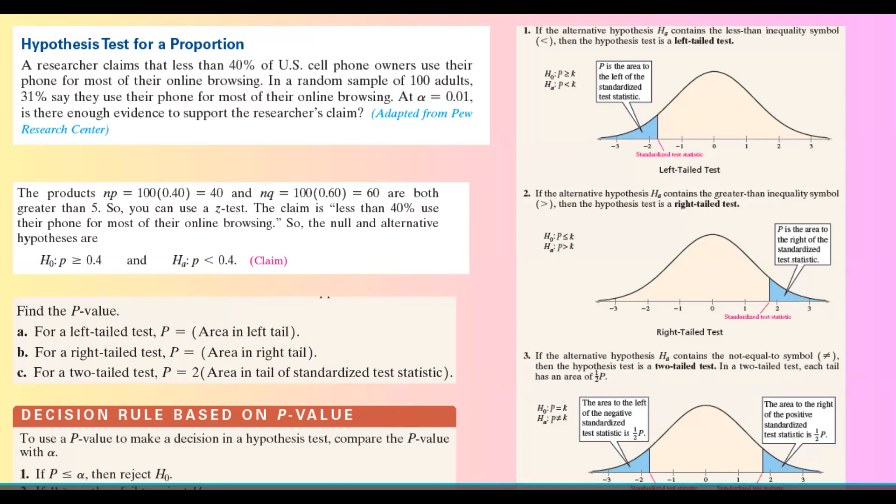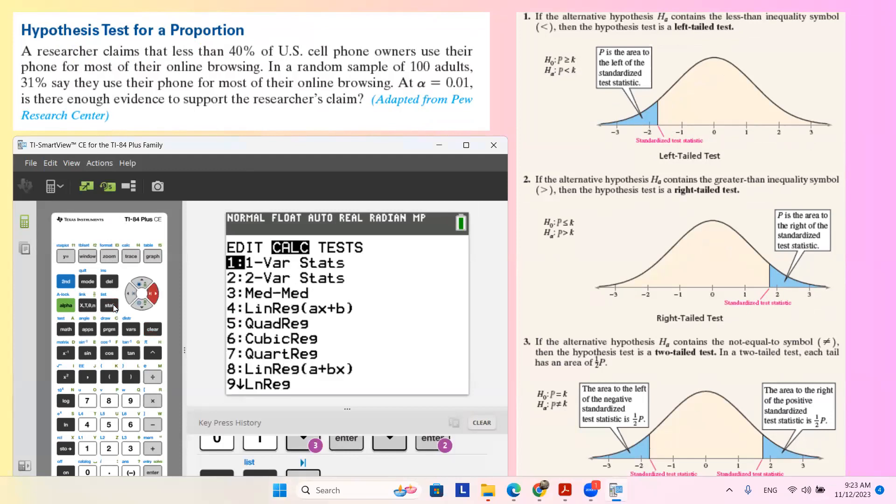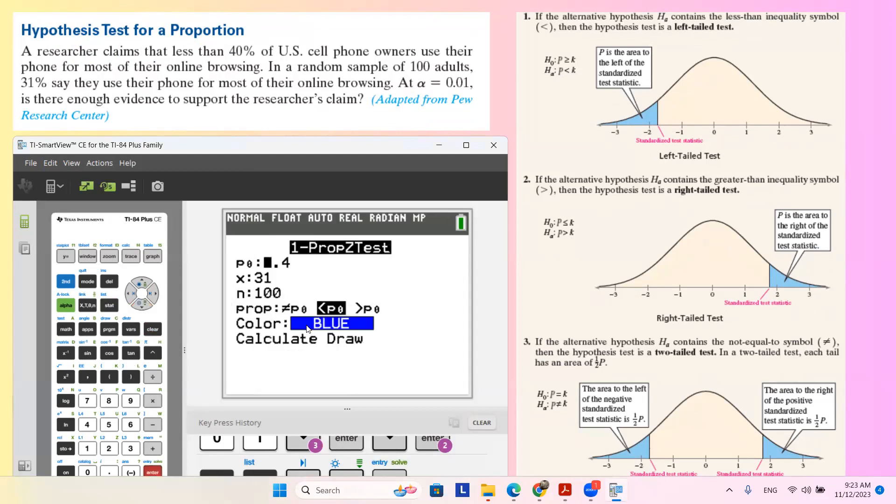So let me share the screen with you. For a hypothesis test for a population proportion, you're going to go to STAT, then go to Tests, and then you're going to find one proportion Z-test. This is one sample, so you have one proportion Z-test.